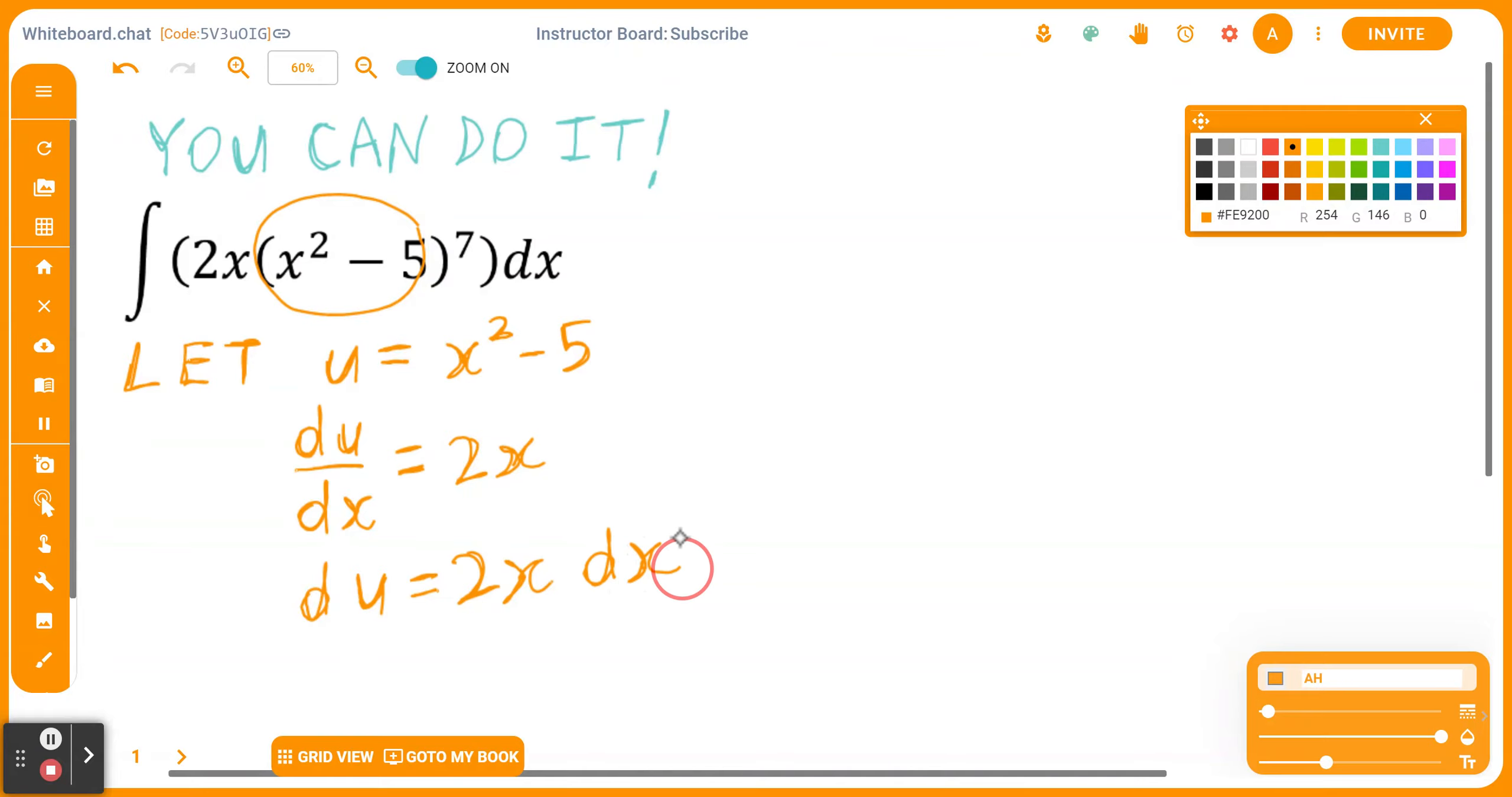And again, let me switch colors for you. So I'm circling this part in orange. Let's do this in a different color. 2x times dx.